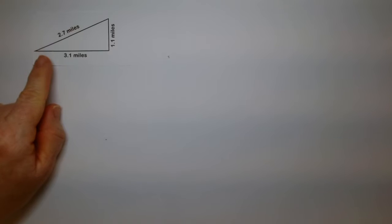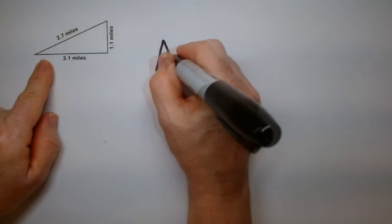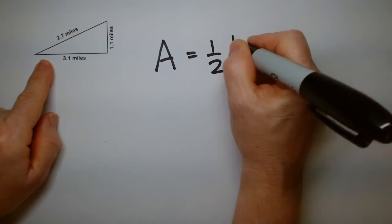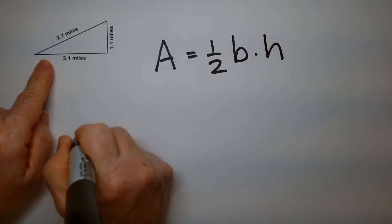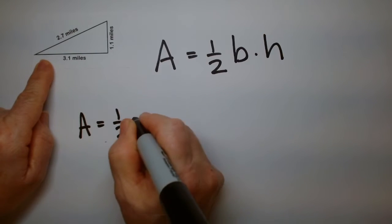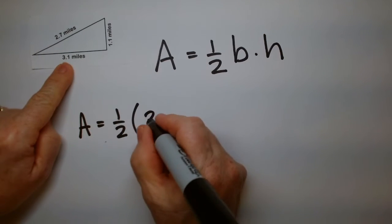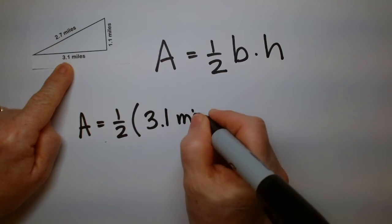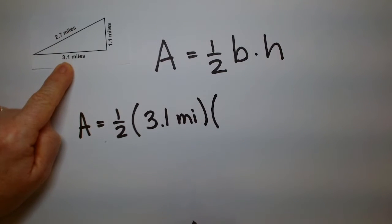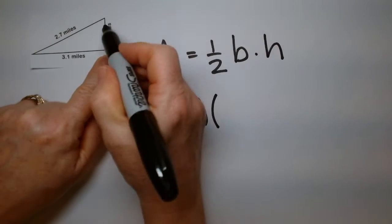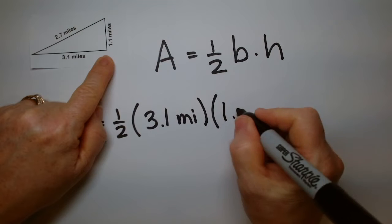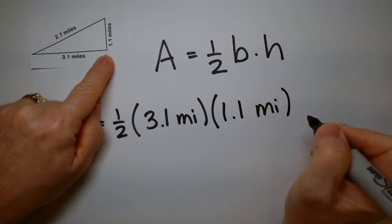Let's find the area of this triangle. My formula is one half times the base times the height. And that's going to be one half. The base in this case is 3.1 miles. M-I is miles. The height, which one of these is the height? It's going to be the one that goes straight up, and in this case it goes along the side of the triangle, which is 1.1 miles.